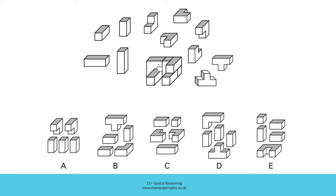However, consider the fact that this section of the L-shaped block would have nothing directly underneath it. All parts of the blocks must be properly supported, and because this cuboid isn't directly underneath this section of this L-shaped block, A cannot be correct.